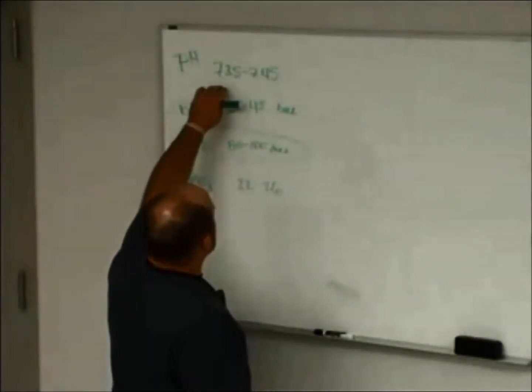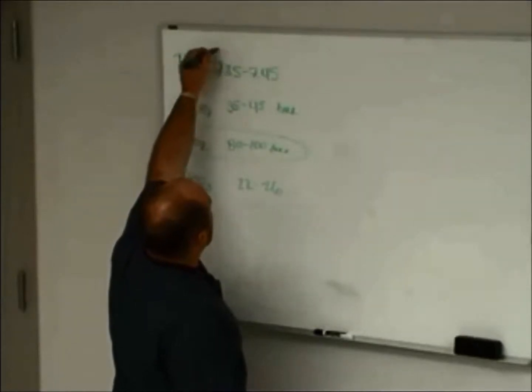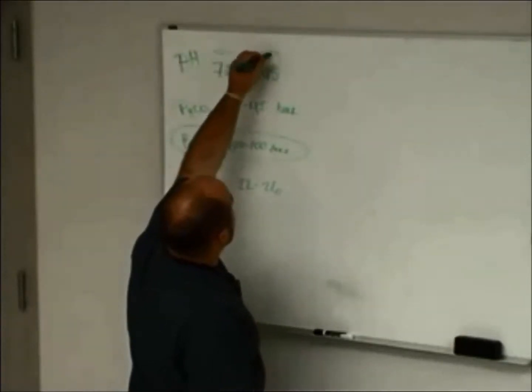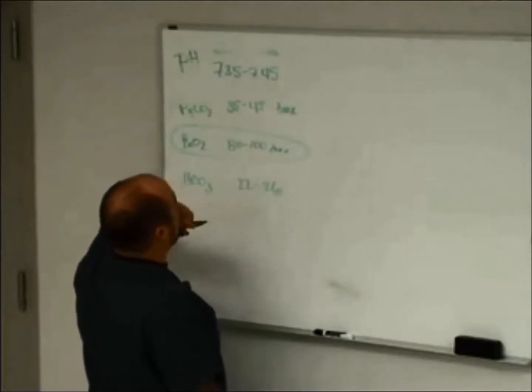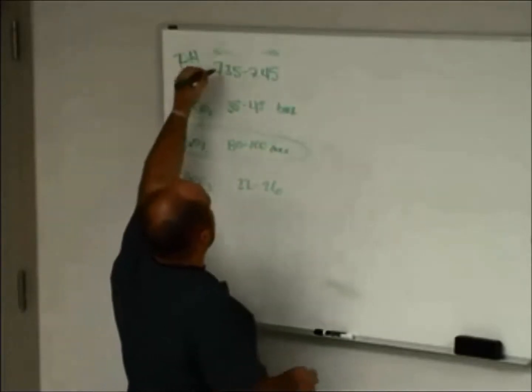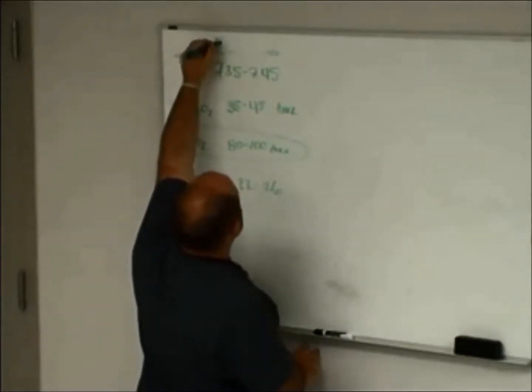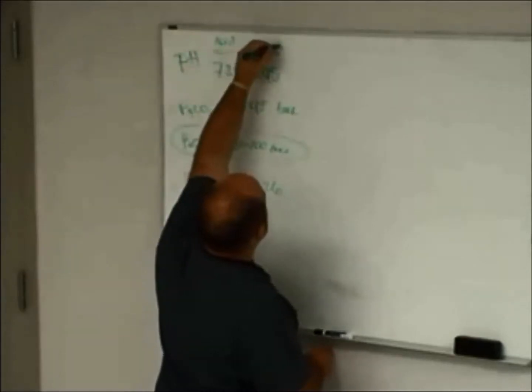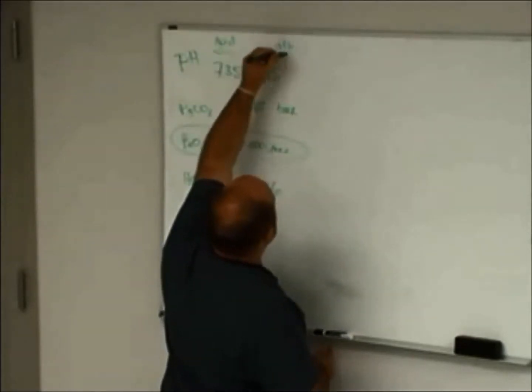So now you need to know what happens if you're below 7.35 or you're above 7.45. So if you're below, you're going to be an acid. If you're above, you're going to be alkalonic. I'll write ALK on there.